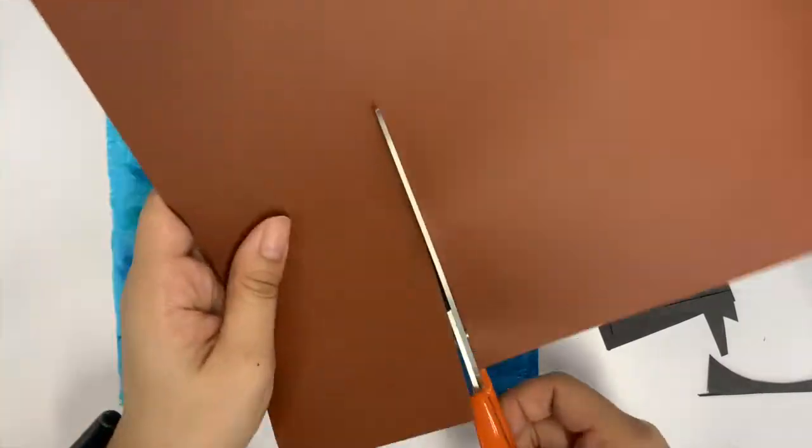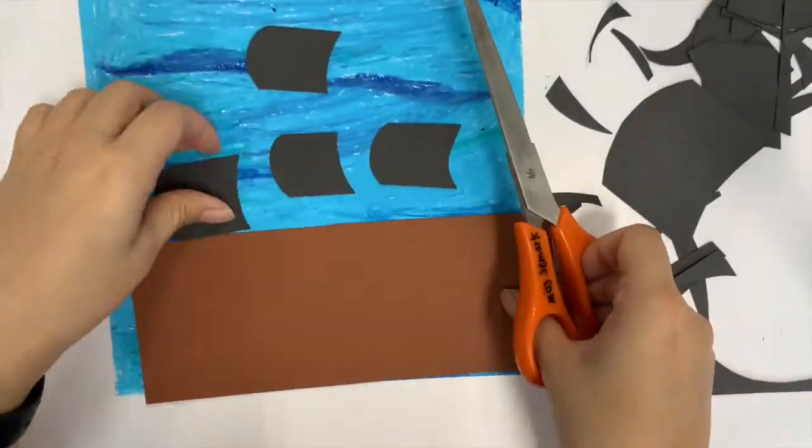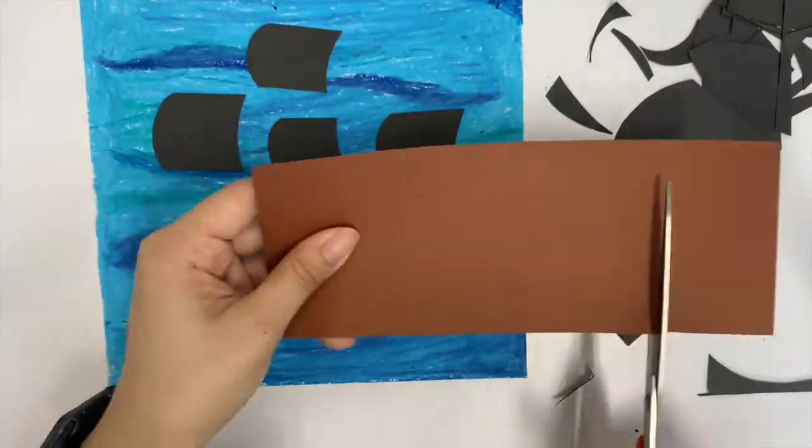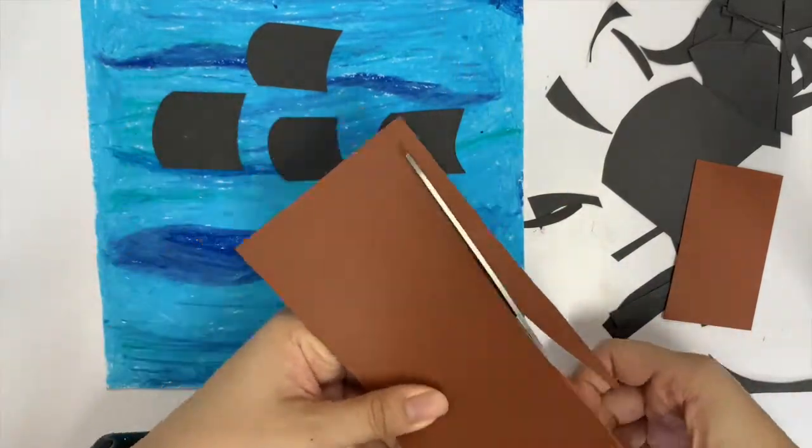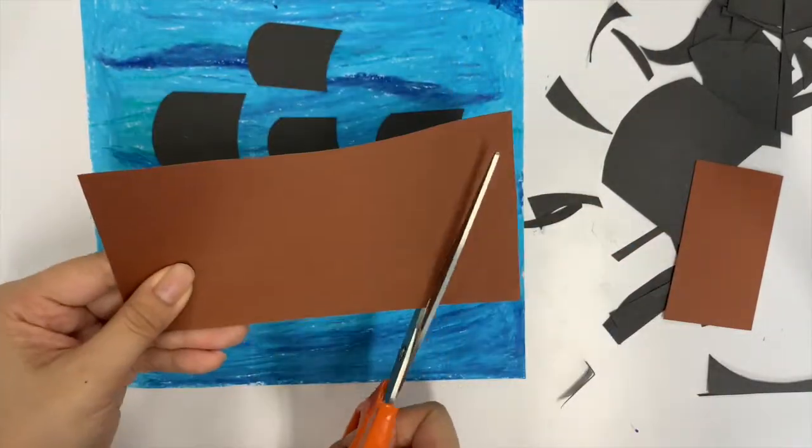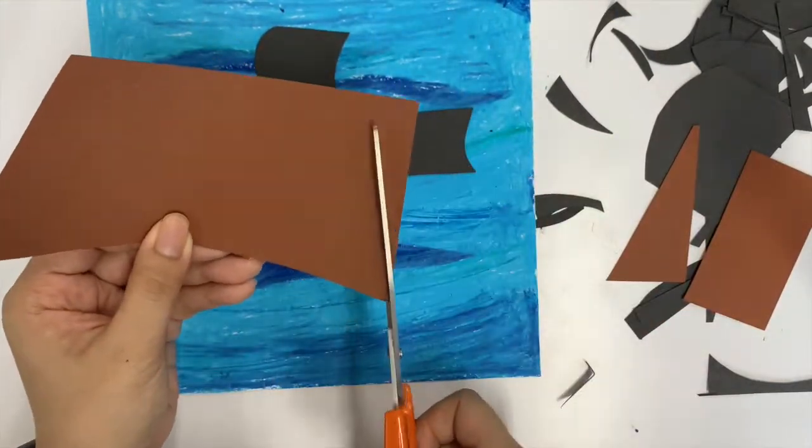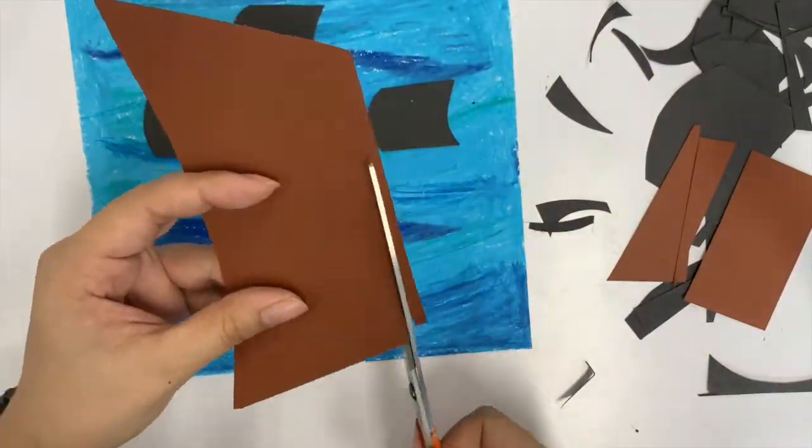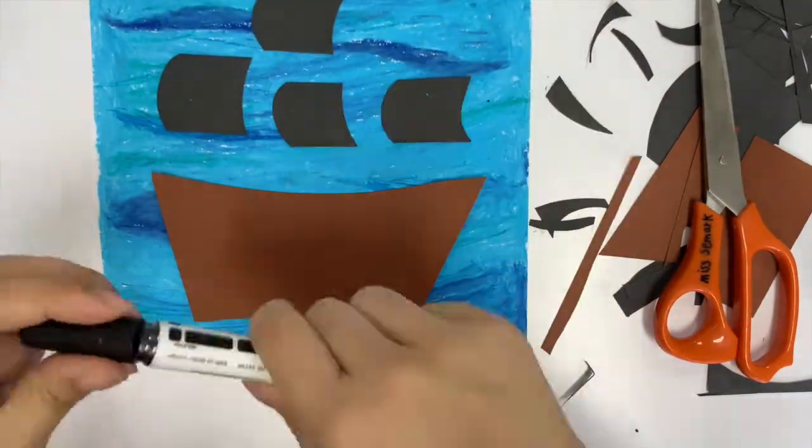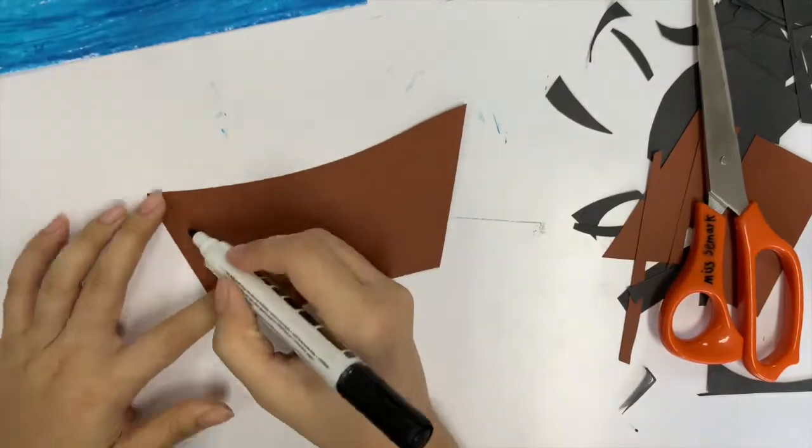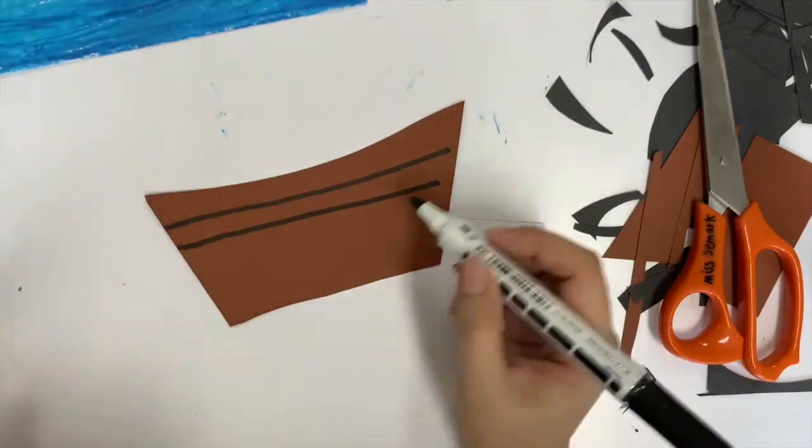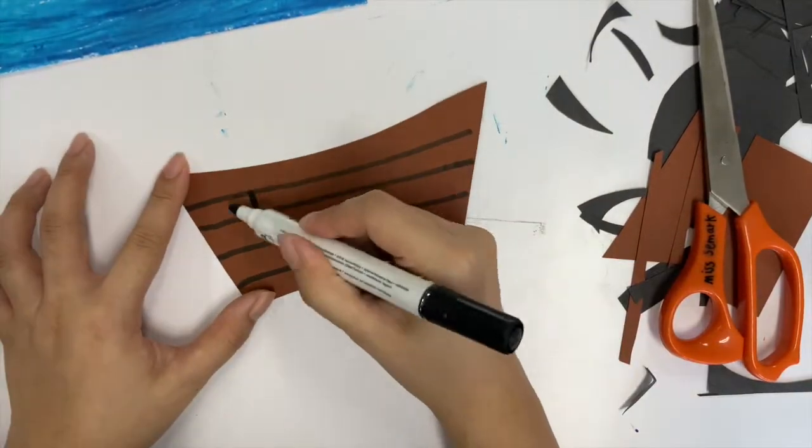Now grab the brown paper and cut it into your own pirate ship. You can use your own design - you can do it bigger, smaller, or any different kind of pirate ship. And now I'm going to grab my black marker and draw a pattern on my ship.